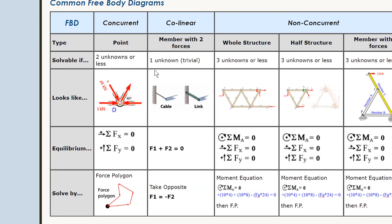A free body diagram is an engineer's way of concentrating all their analysis on one thing at a time. You're solving equilibrium for a particular body — it could be as small as a single pin joint, or the entire structure. Here are five different ways to split a structure into different bodies. The first is concurrent, where we split it into a single point like a bolted joint between truss members — that's a concurrent force question, solved with a force polygon.